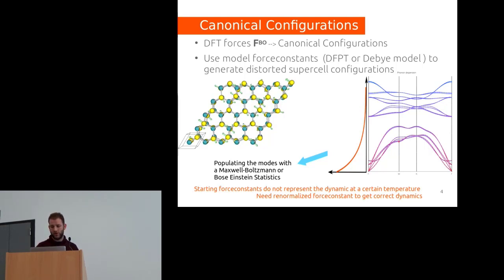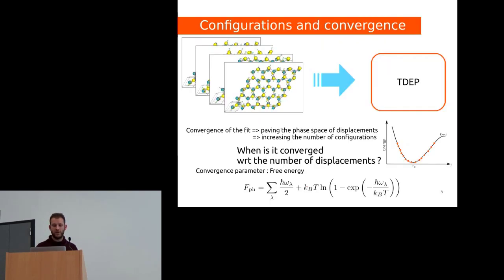The idea is to calculate a few configurations to input into TDEP. The question is how many configurations do you need for the force constant fit to be converged. What I'm using as a convergence parameter is the free energy. The free energy is the sum over all the frequencies, so if all the phonon frequencies are converged, then our parameter, the free energy, will be converged as well.